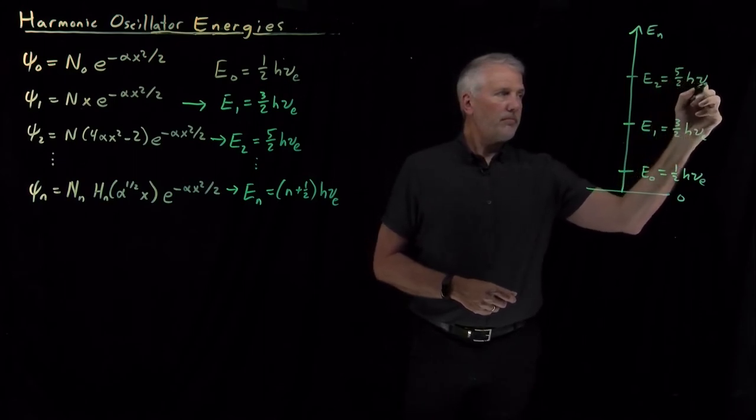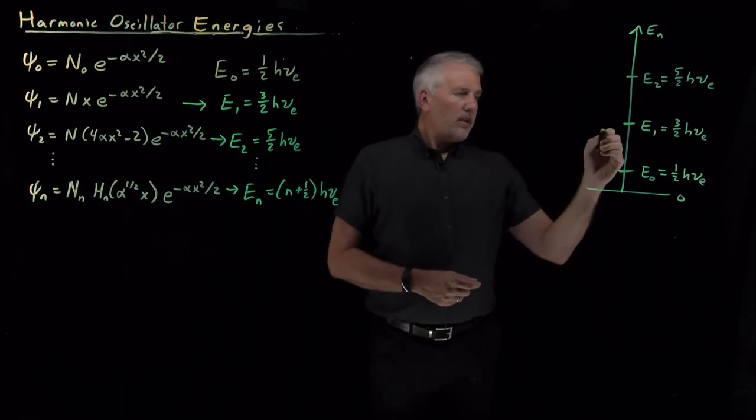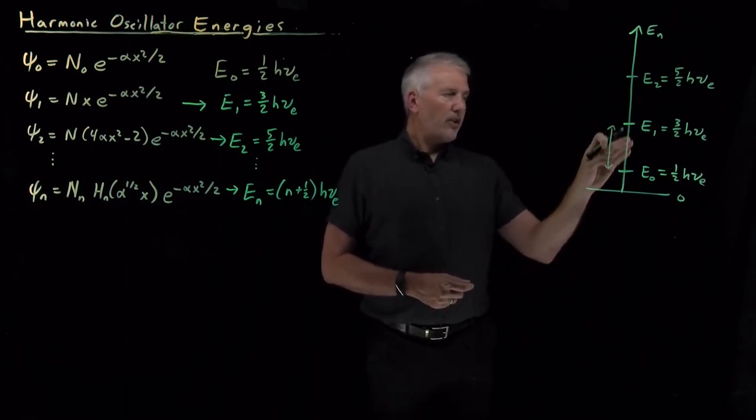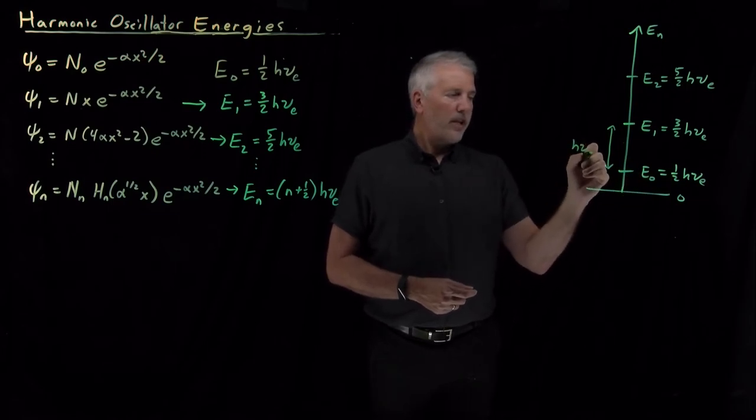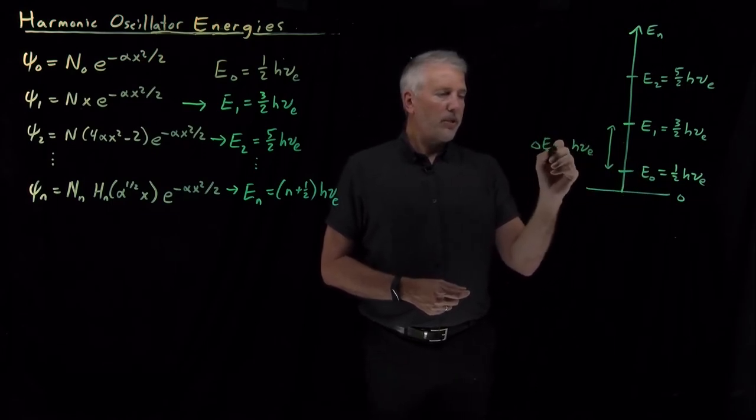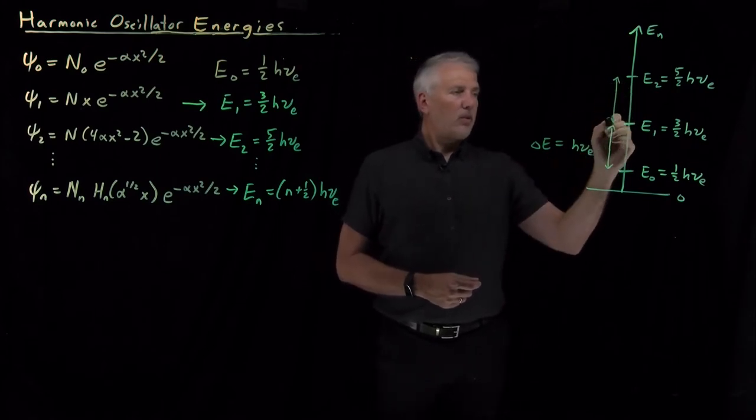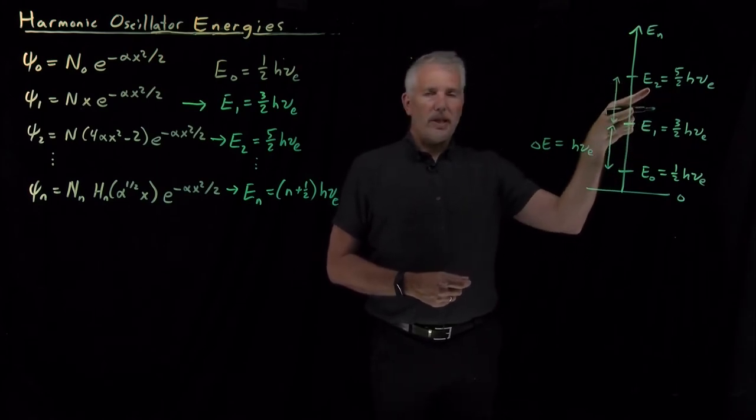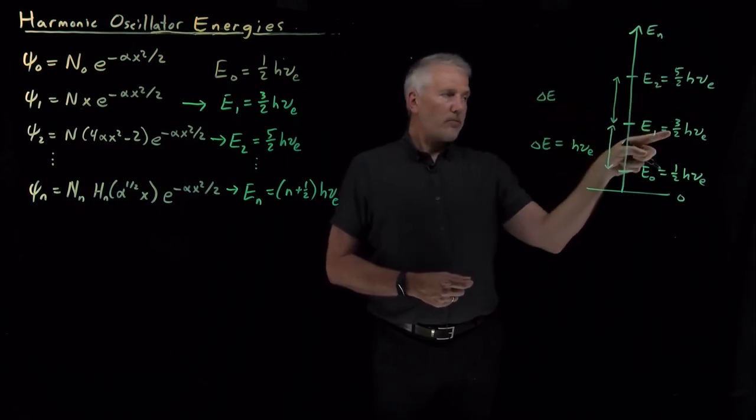So notice that the gap between the E_0 and E_1 wave function, three-halves minus one-half, is one factor of h nu. That's the difference in energy between these two successive states. Likewise, the difference between E_2 and E_1, that energy difference is also five-halves minus three-halves, is also one factor of h times nu.